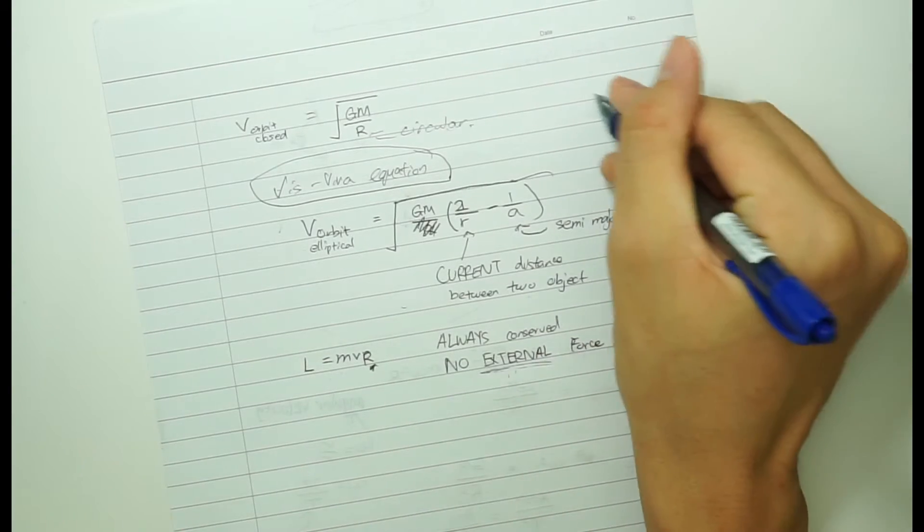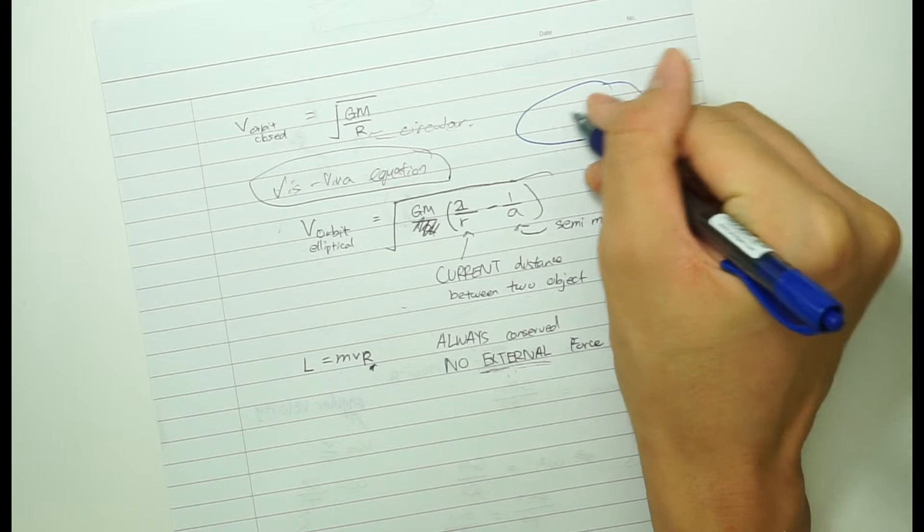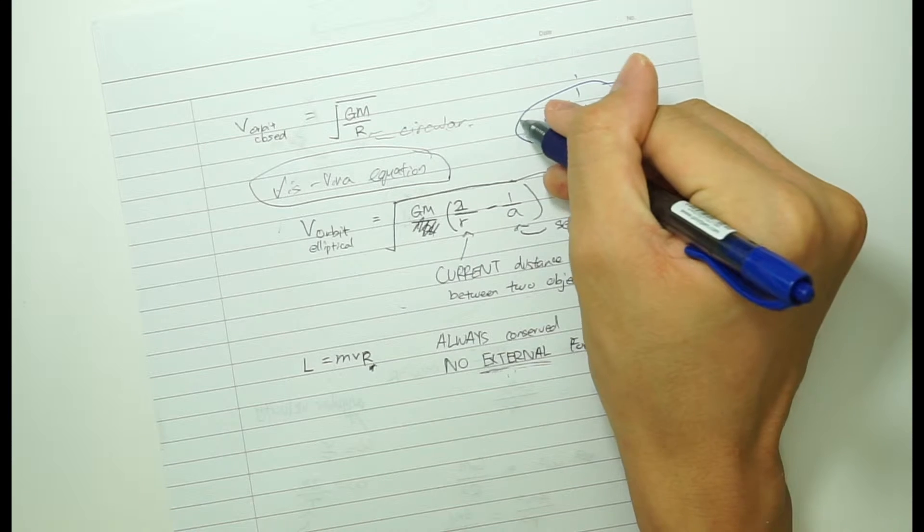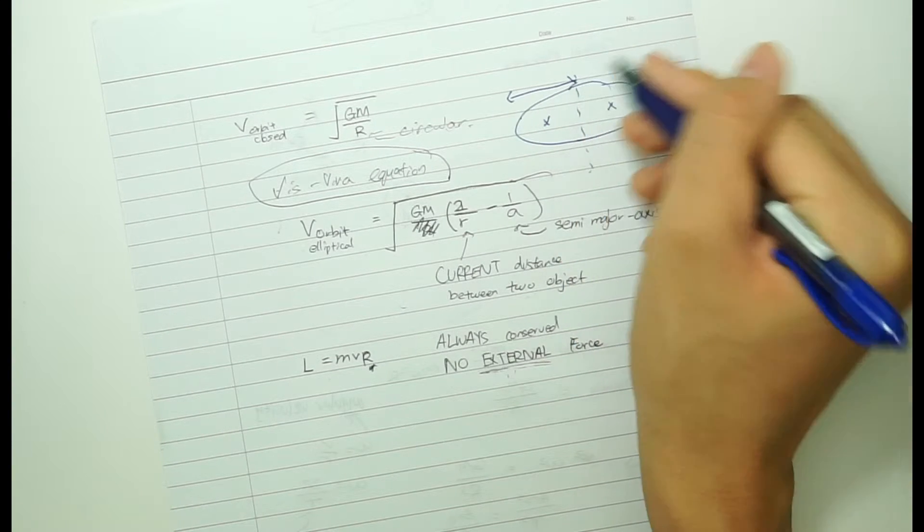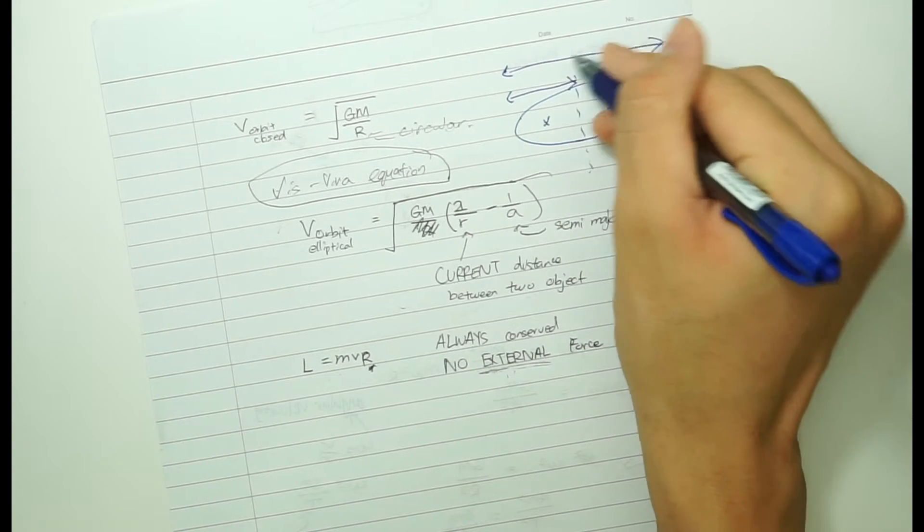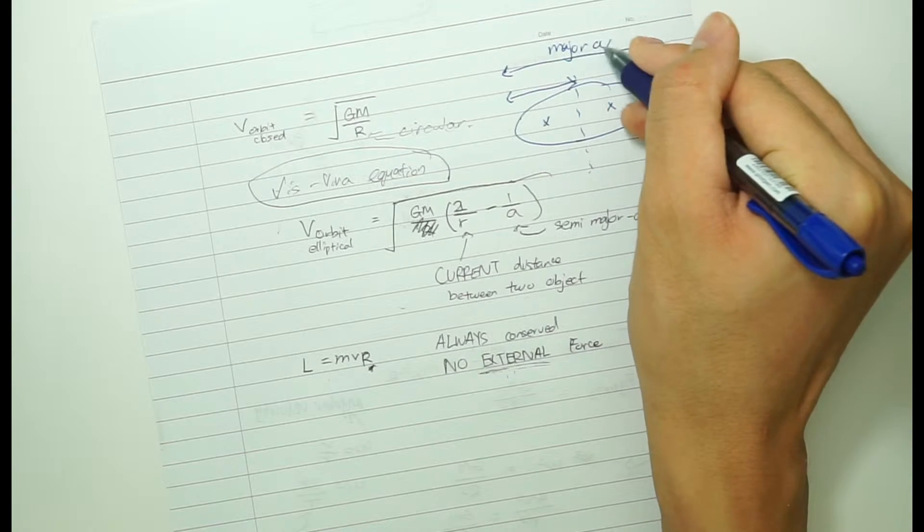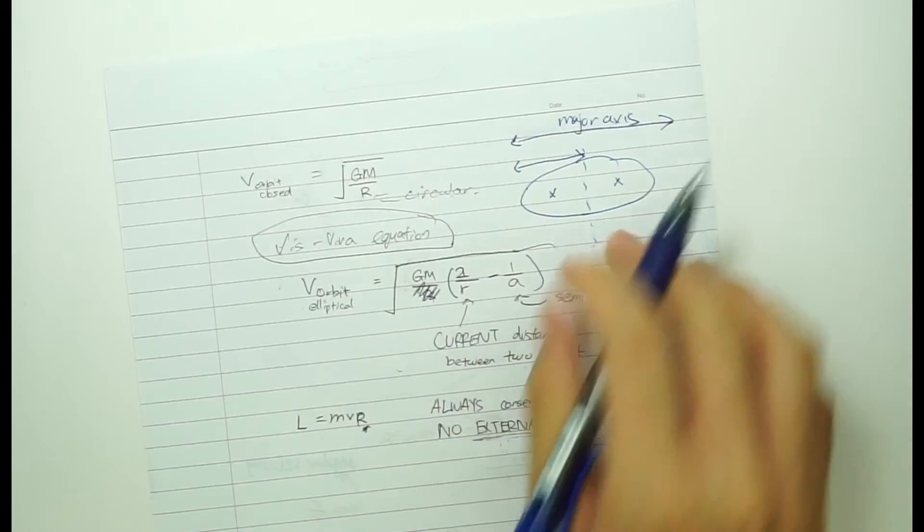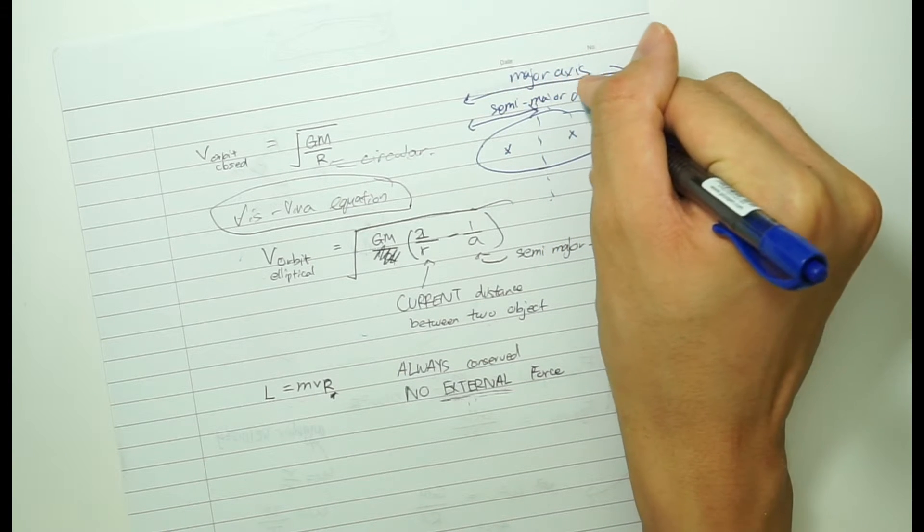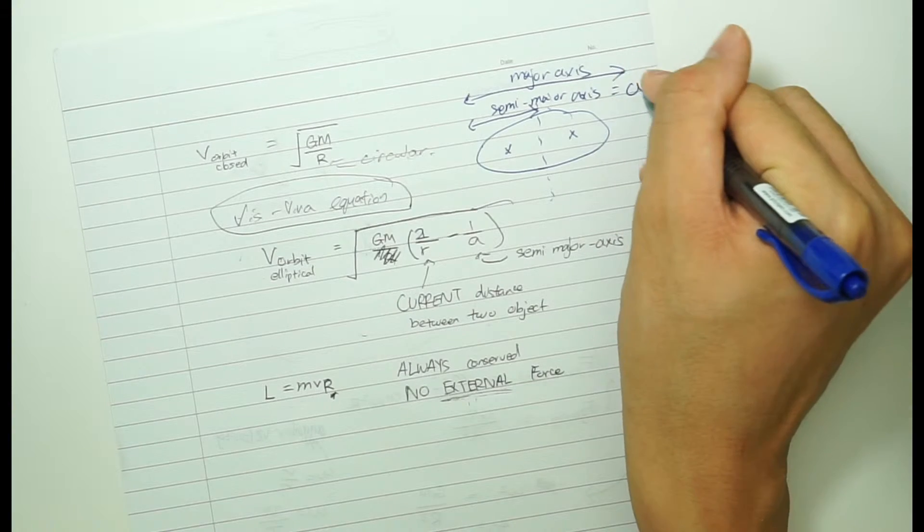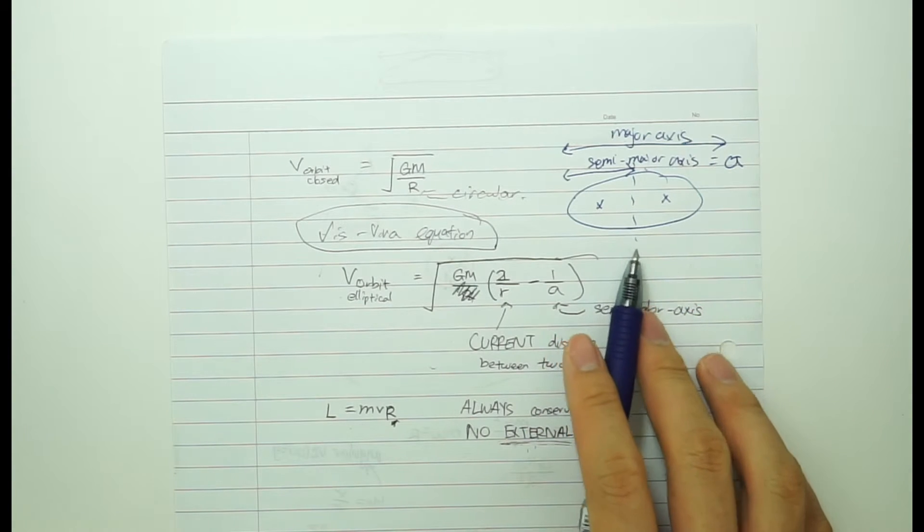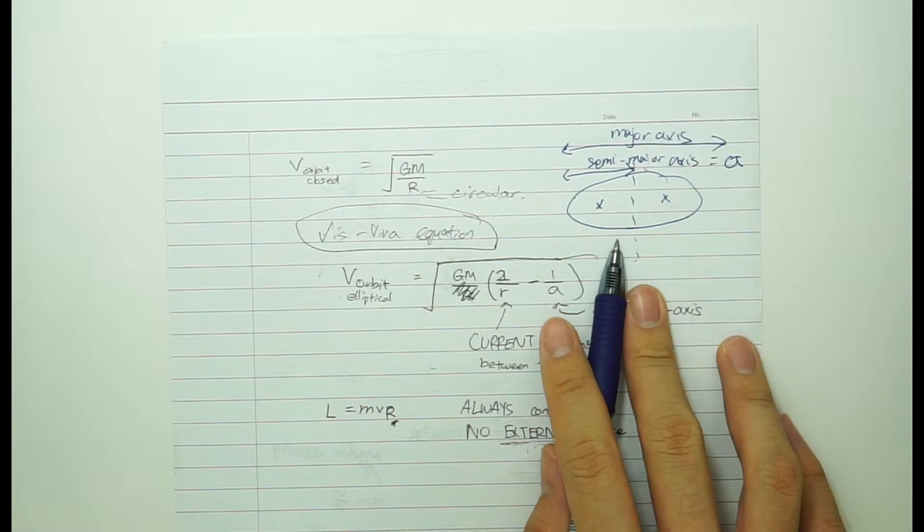So you get 2 divided by r, which is the current distance between the two objects, and 1 over a, and a is the semi-major axis. Now to quickly explain what a semi-major axis is, first we measure ellipse, and ellipse has two points at its foci. What a semi-major axis is basically, the distance between one edge and the center, the longest. This is called the major axis, and this one is called the semi-major axis, which we just labeled as A. You can calculate this using eccentricity.